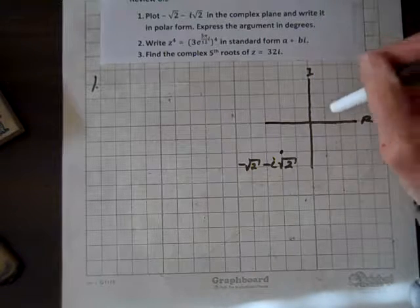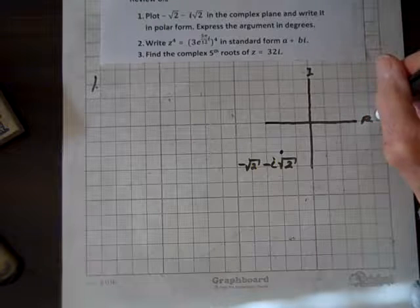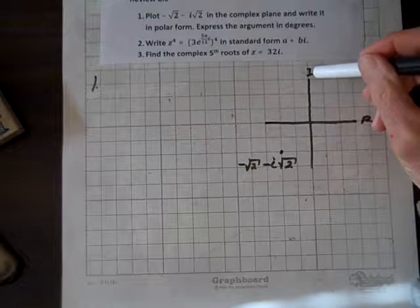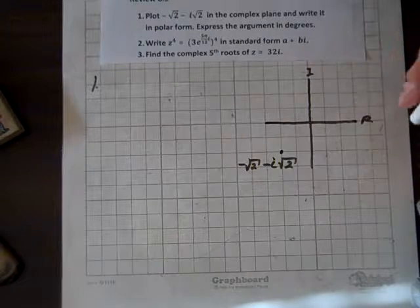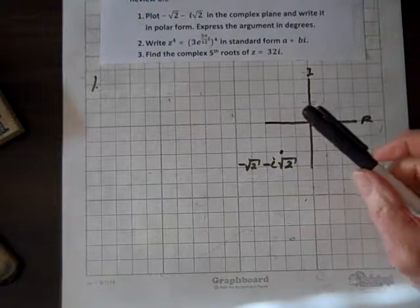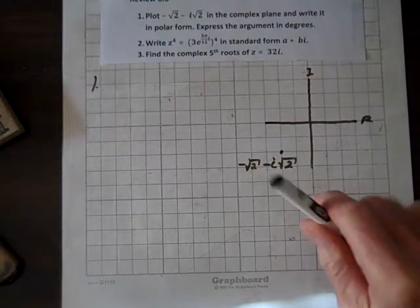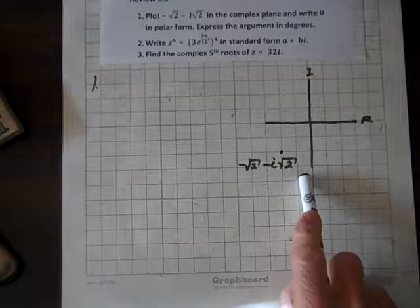So on the complex plane, the horizontal axis is the real axis, the vertical axis is the imaginary axis, and so now we've plotted that point.